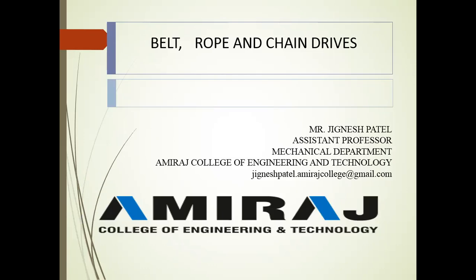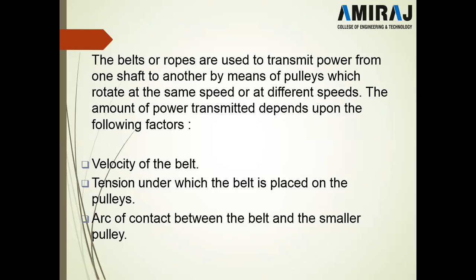So what is the belt drive? Belt drive is the mechanism which transfers power from one pulley to another pulley. Belts or ropes are used to transmit power from one side to another by means of pulleys which rotate at the same speed or at different speeds. Two different kinds of pulleys with different diameters and dimensions are used, so the two pulleys can have different speeds.